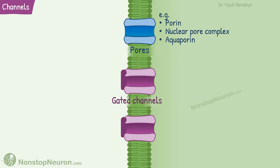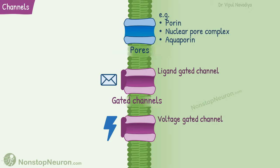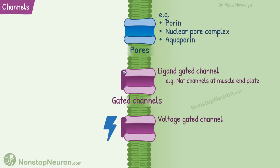These gates are controlled by ligands or voltage. The respective channels are called ligand-gated and voltage-gated channels. Ligand-gated channels open or close depending on the binding of certain ligands. For example, sodium channels at the muscle end plate open on binding of acetylcholine.